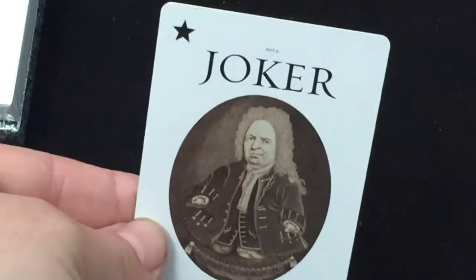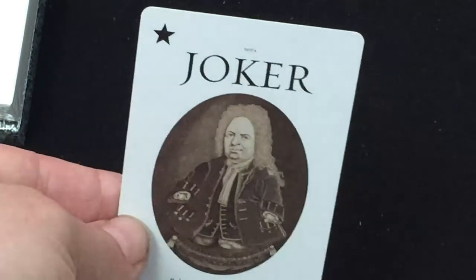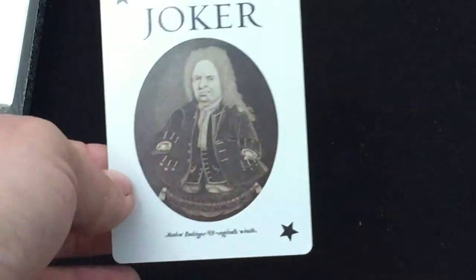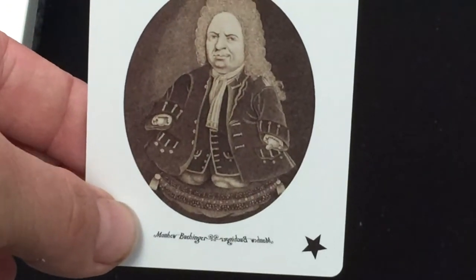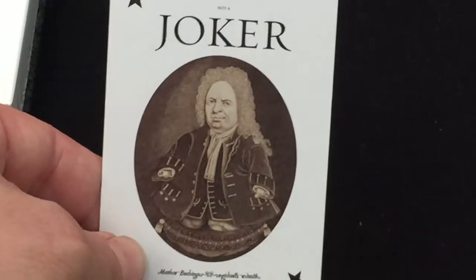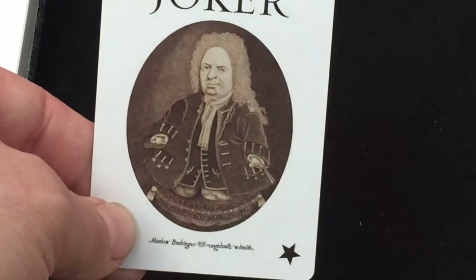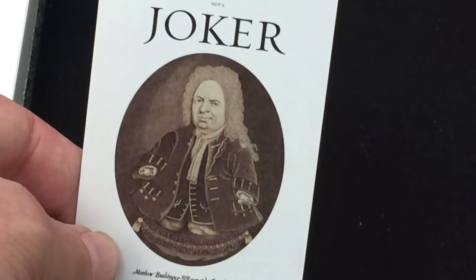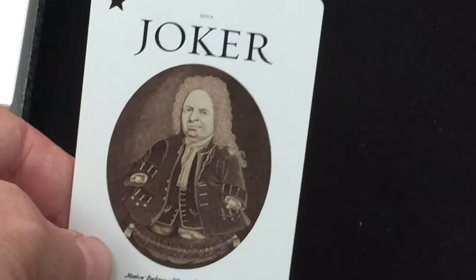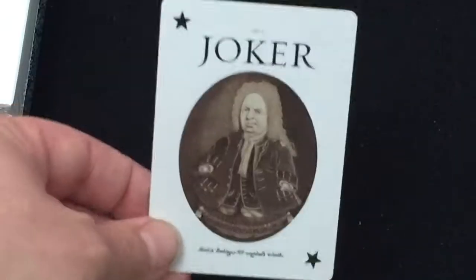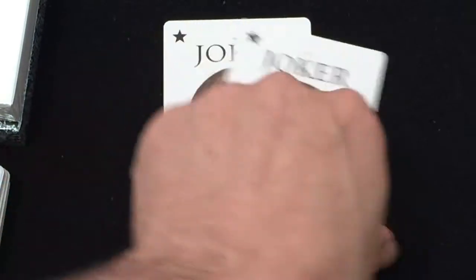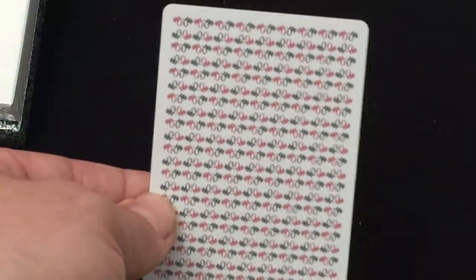Next we get to the jokers, which actually says not a joker on top, and has stars and corners. Says Matthias Butchinger and his name is also a mirror image on there, and you see him, a guy with no hands or feet and one of those weird 1800s wigs. Pretty interesting. The other one is the same thing, not a joker.